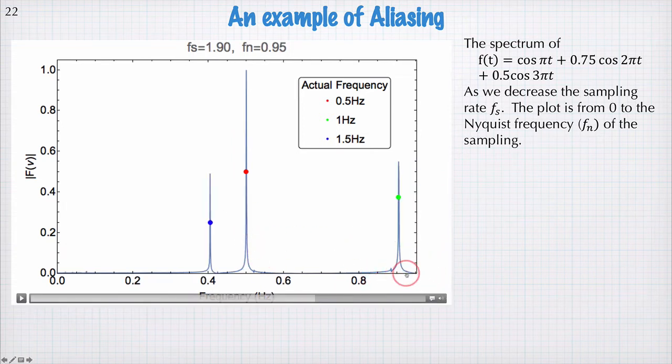So for example, with this particular sampling rate here of 1.9 hertz and Nyquist frequency of 0.95 hertz, we seem to be picking up a frequency here of 0.4 hertz. But there is no 0.4 hertz in this spectrum. It's an artifact. This is actually a peak caused by the signal at 1.5 hertz that's been wrapped back into the domain.